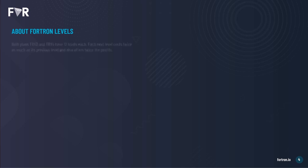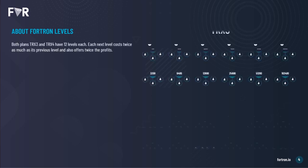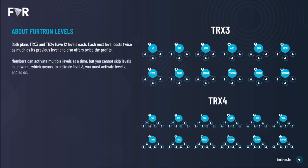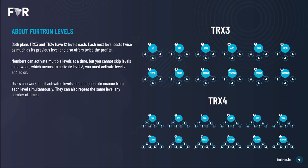Both plans — FTR3 and FTR4 — have 12 levels each. Each level costs twice as much as the previous level, but also offers twice the profits. Members can activate multiple levels at a time, but you cannot skip levels in between, which means if you want to activate level 3, you must activate level 2 first, and so on. Users can work on all activated levels and generate income from each level simultaneously, and they can also repeat the same level any number of times.